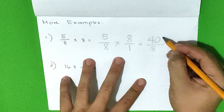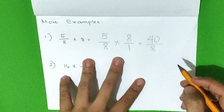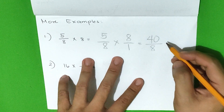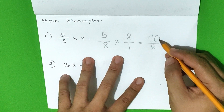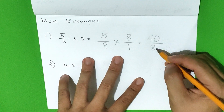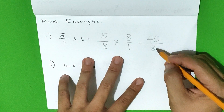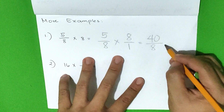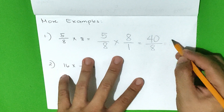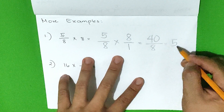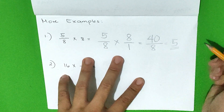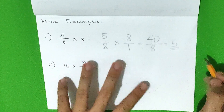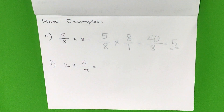Since our product can still be reduced to lowest terms, let us divide 40 by 8. 40 divided by 8 is equal to 5. So our product is 5.